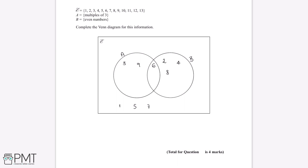10 is an even number and not a multiple of 3. 11 is an odd number which is not a multiple of 3. 12 is a multiple of 3 and an even number. And finally, 13 is an odd number which is not a multiple of 3.